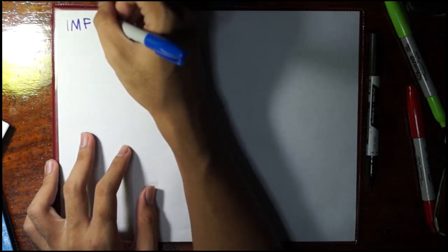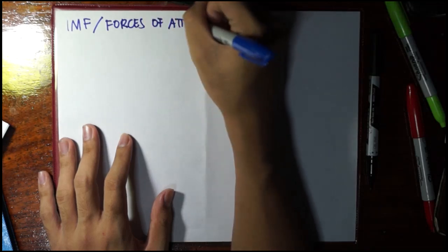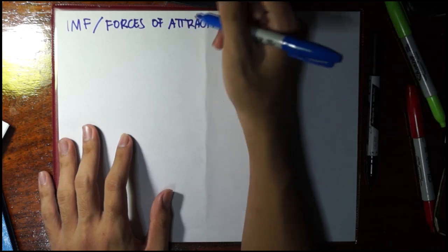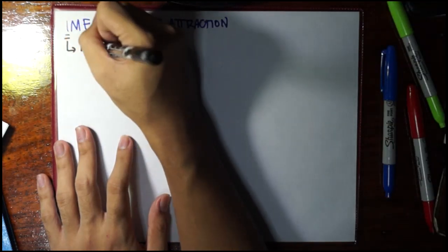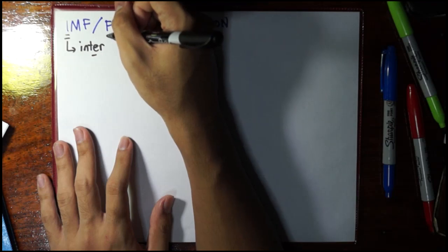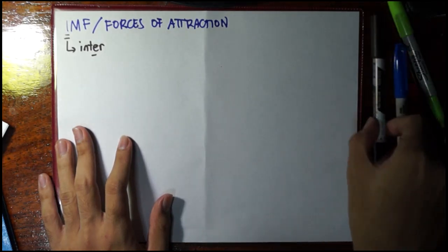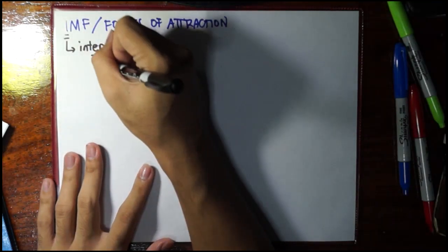Now we are done with hybridization. The next topic is something we have already discussed in general chemistry, but it's going to be even more useful this time because we're going to see them in structures. This is usually called in general chemistry 'intermolecular forces of attraction,' but we can just call them 'forces of attraction.' The prefix is inter, not intra — like in interpersonal skills, it's a property between two different objects, people, or species. So forces of attraction occur between two different molecules — for example, ethanol.